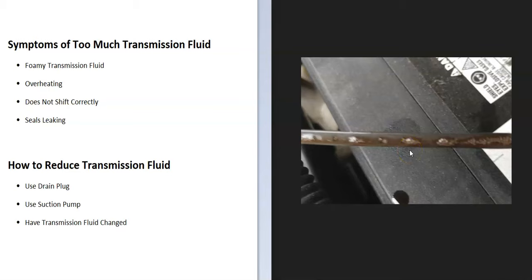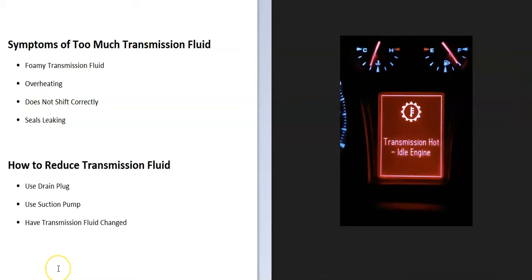Another thing that can happen is that the transmission starts to overheat because it's got a lot more pressure inside of there and it's really having to work. All this pressure is pushing that fluid around, and so you could even get a transmission light coming on or the computer telling you that the transmission's overheating.